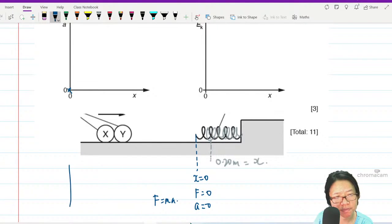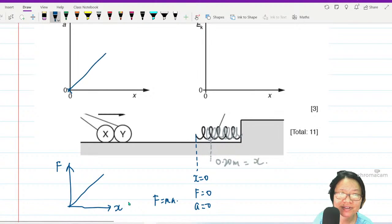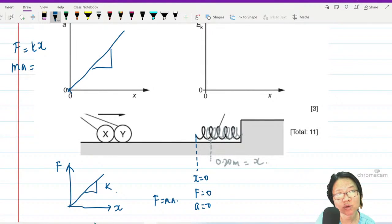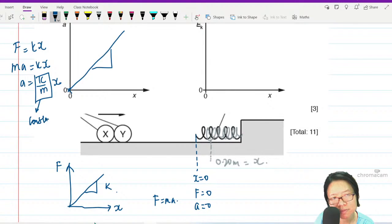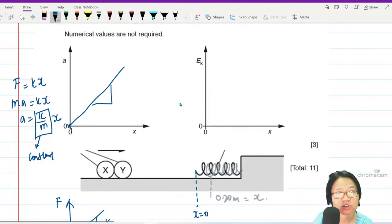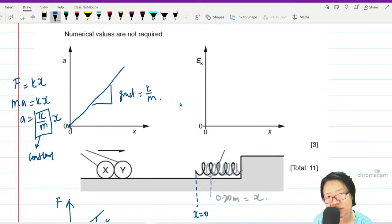Because this gradient is spring constant k. If you're wondering what this gradient represents, use equation. f equal kx, ma equal kx, a is equal to k over m times x. This is constant. So if you draw the a against x graph, you will get a straight line. Gradient is equal... you don't need to write all of this extra detail. What we need is just a straight line through 0,0. This is y equals mx.